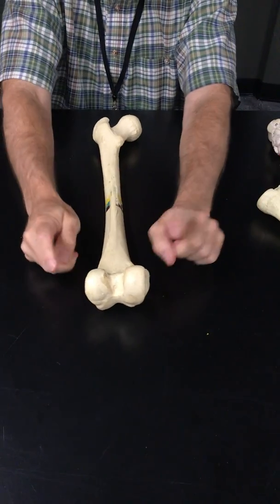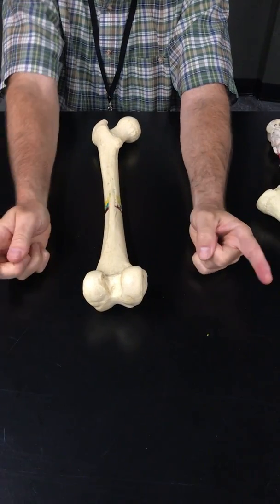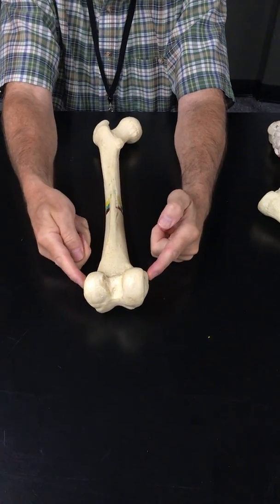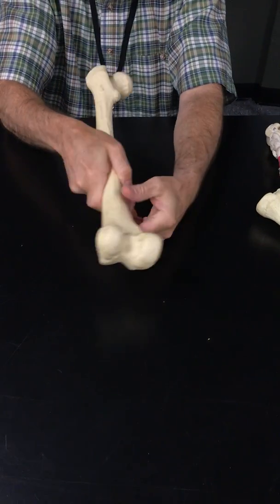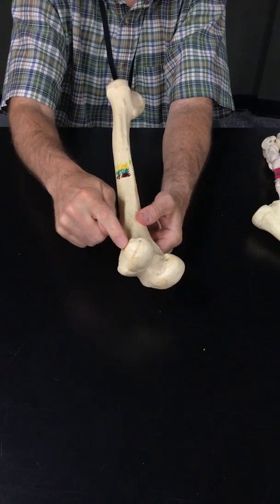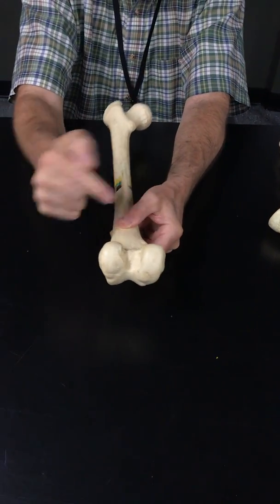On the humerus, we saw condyles, trochlea, capitulum, and then we saw a bone called epicondyle. And here is the medial epicondyle next to the medial condyle and the lateral epicondyle next to the lateral condyle. Again, attachment point for muscles.